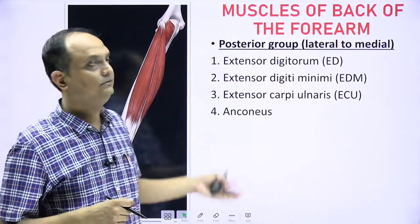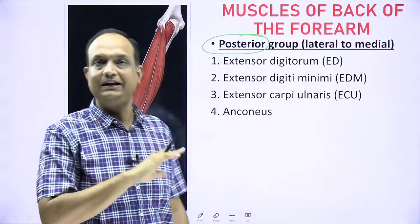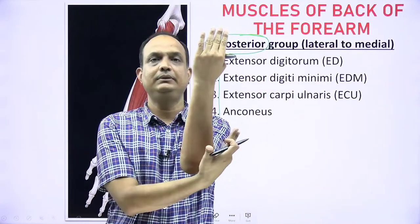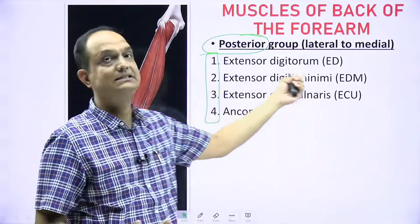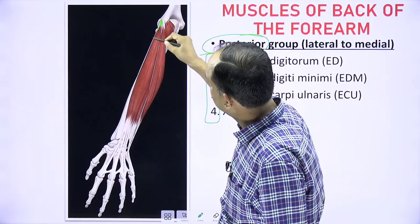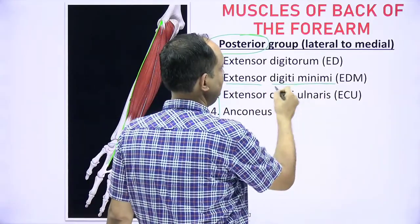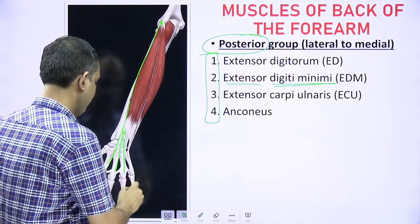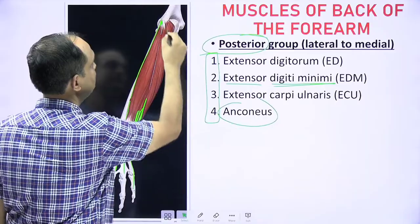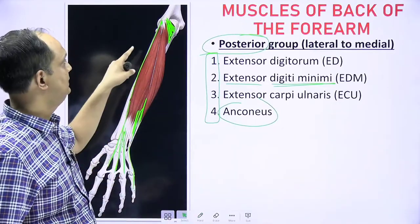The next group is the posterior group of the superficial muscles. This group has four muscles arranged from lateral to medial: extensor digitorum (most lateral), which supplies four fingers; extensor digiti minimi, which supplies the little finger only; extensor carpi ulnaris; and anconeus.